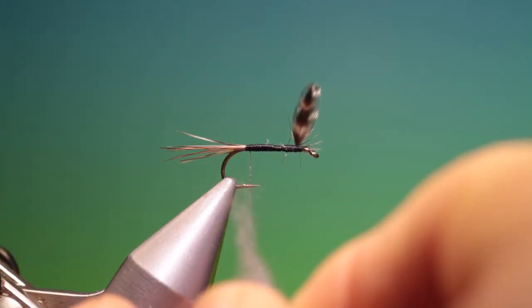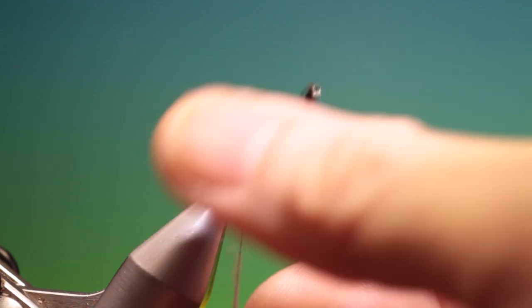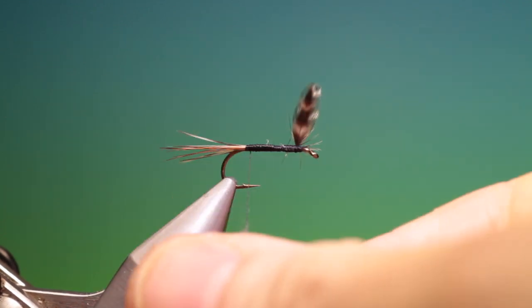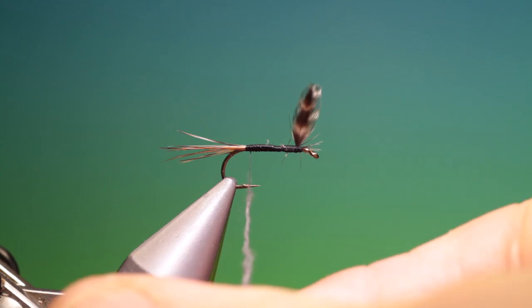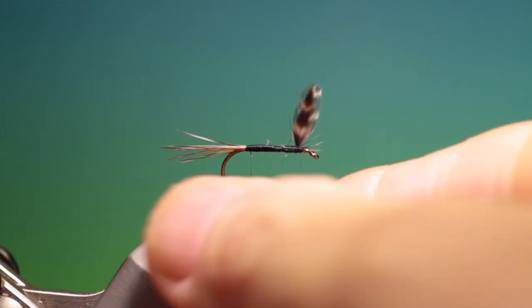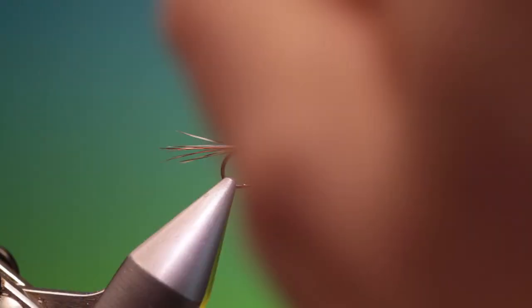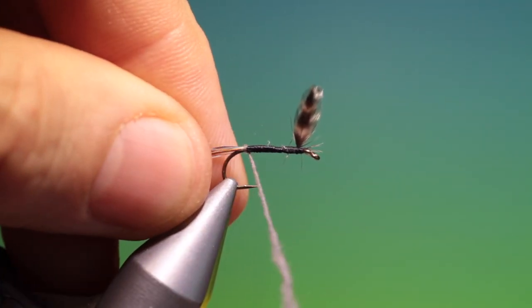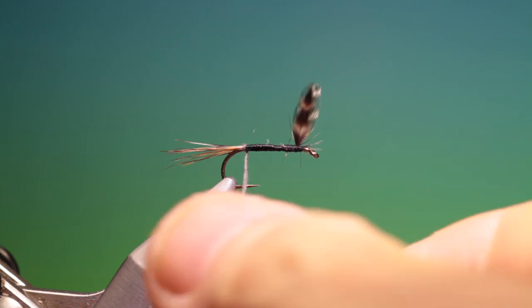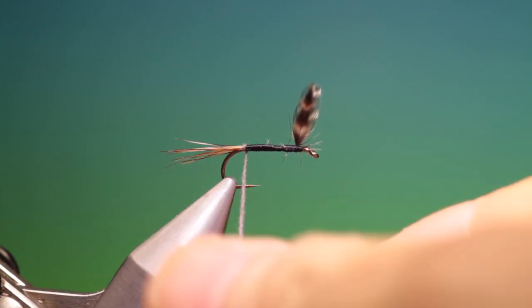A little bit of Adam's grey superfine dubbing. Just spin that on and we push that up just to catch it in. A couple of turns there. And then once it's caught in we can tighten that up.